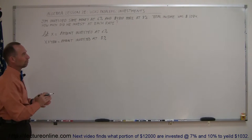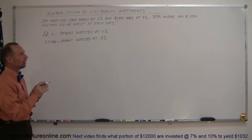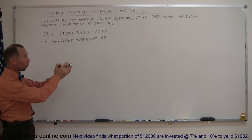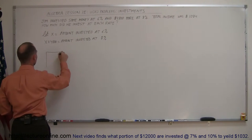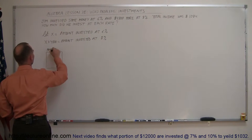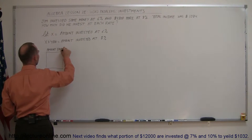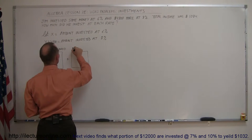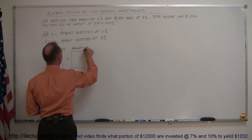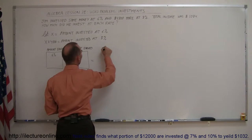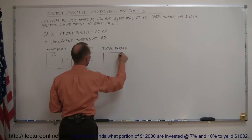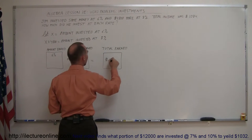So now we need to find an equation. We know that his total income was $1,084, so we can say that the amount earned at 6% plus the amount earned at 8% should add up to the total amount earned. The amount earned at 6% plus the amount earned at 8% should add up to the total earned, and the total earned in this case was $1,084.